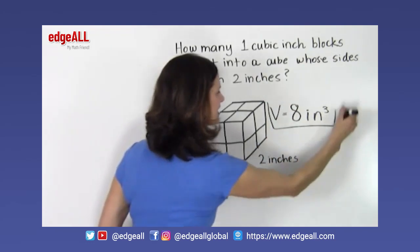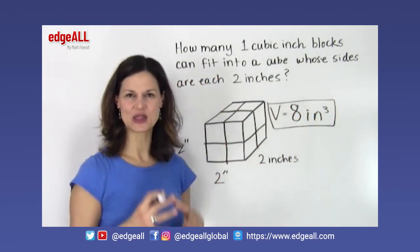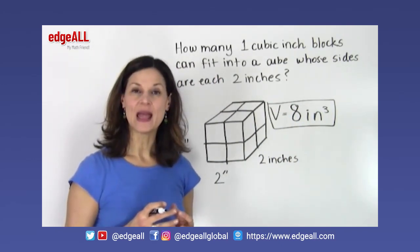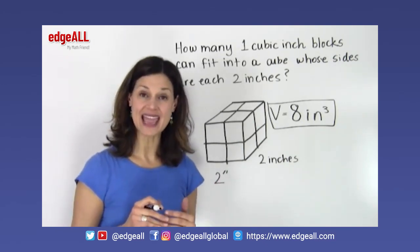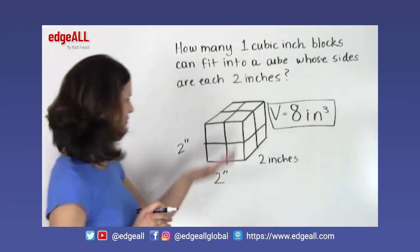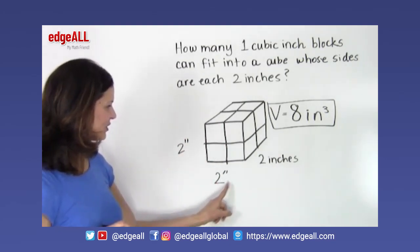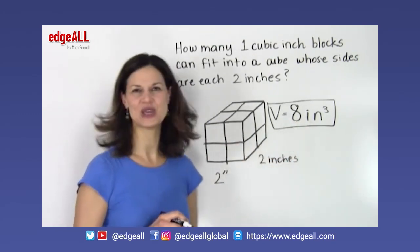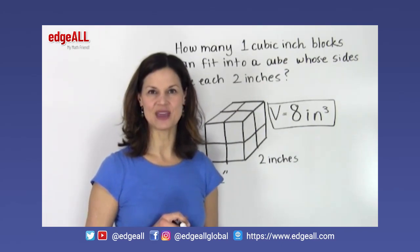So we would call this a volume, the space inside of this three-dimensional figure. And like we said before, the basic equation is length times width times height for the volume of these three-dimensional cubes and cuboids. And you can see that 2 times 2 times 2 equals 8, and the volume of this cube would be 8 inches cubed or 8 cubic inches.